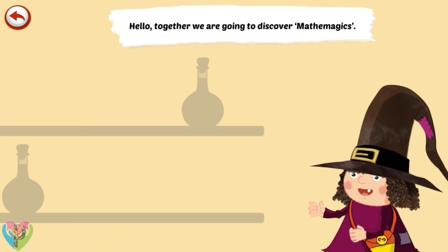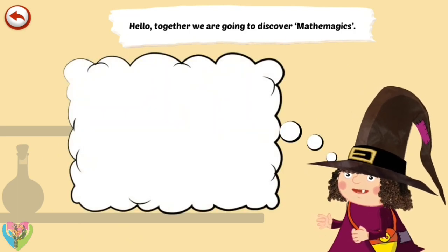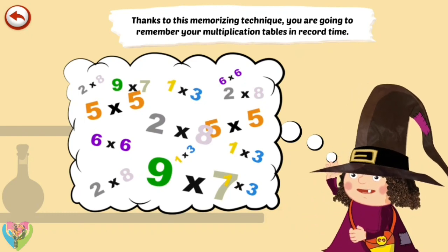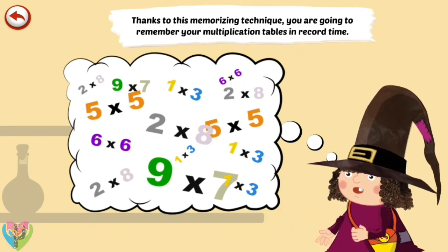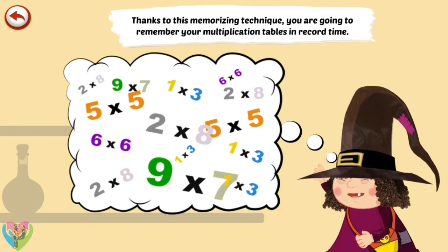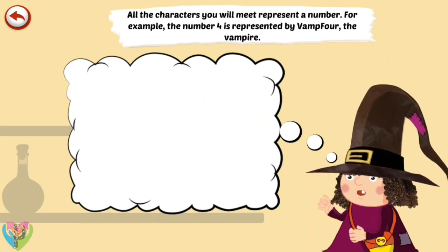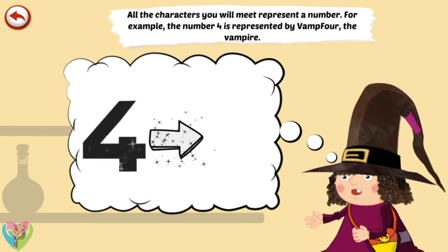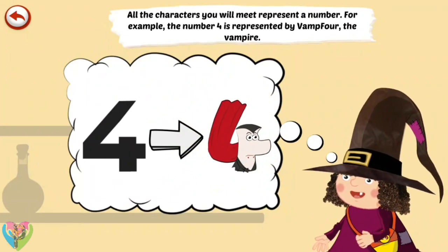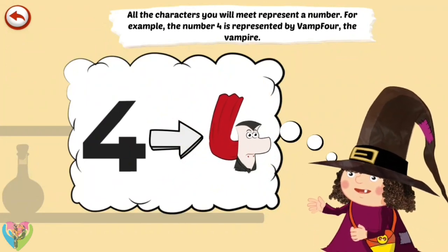Hello, together we are going to discover Math and Magics. Thanks to this memorizing technique, you are going to remember your multiplication tables in record time. All the characters you will meet represent a number. For example, number 4 is represented by Vamp 4, the vampire.